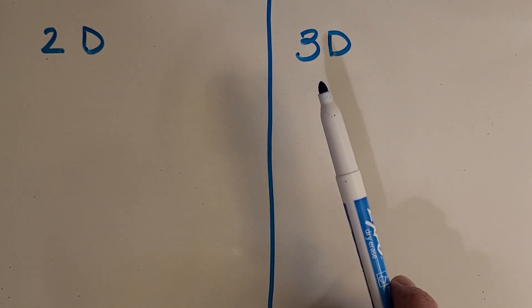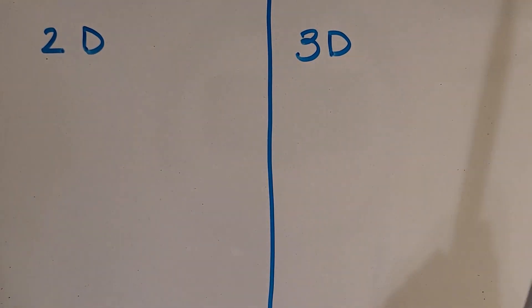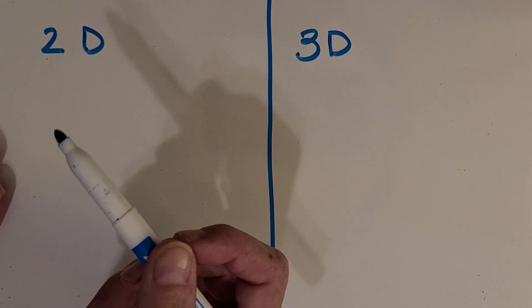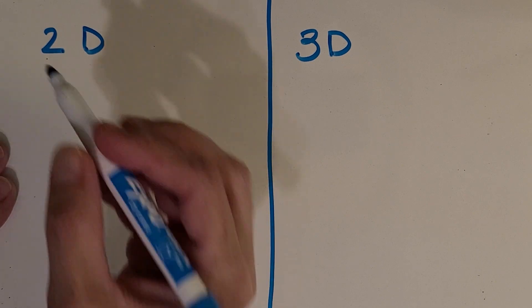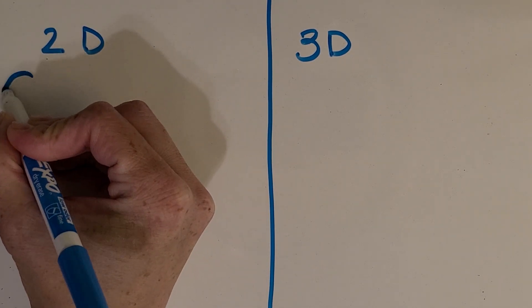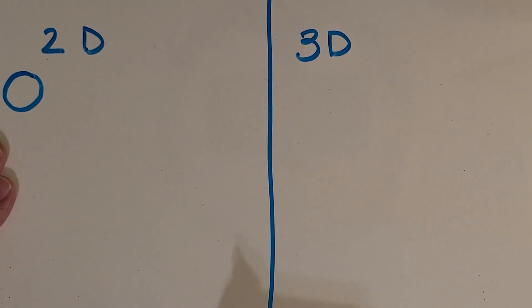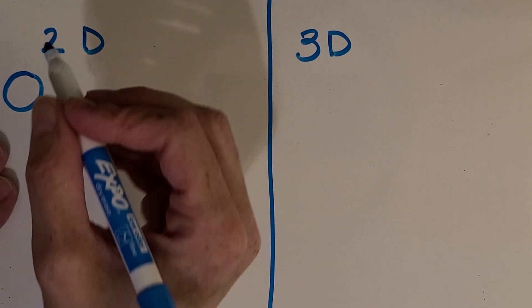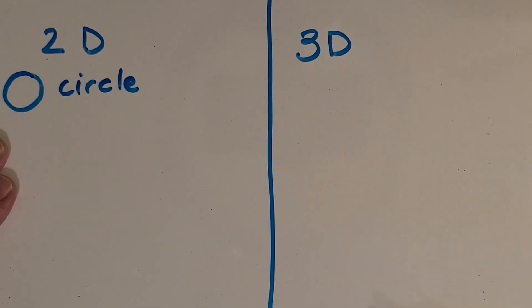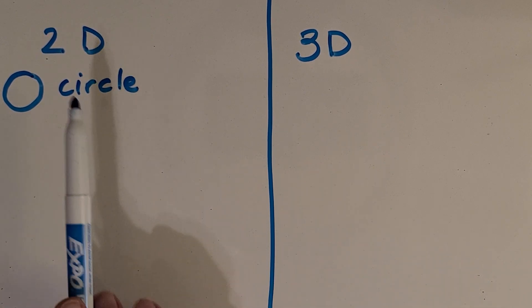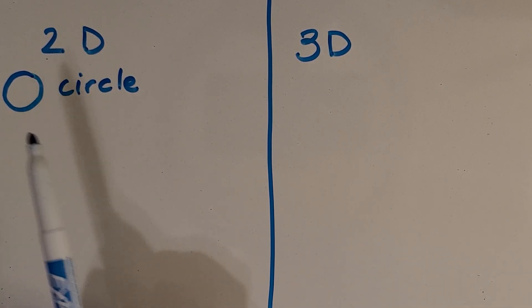We're going to take a look at some of both. First, let's list some 2D shapes we're going to be looking for. What is that? Awesome — a circle! Do circles have any straight lines? You're right, they do not. So we're going to be taking a look at shapes that have no straight lines and some that do.